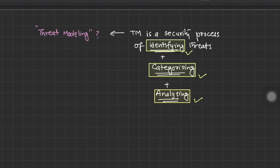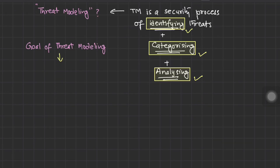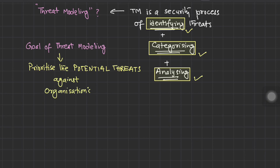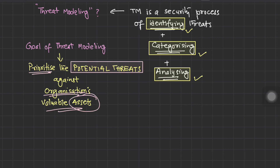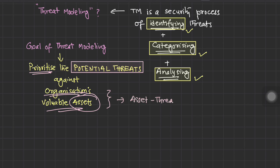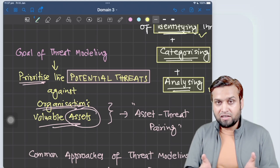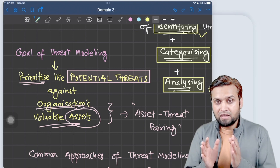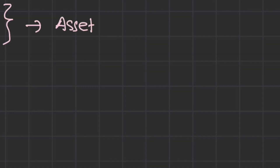When we look at the goal of threat modeling, the primary goal is to prioritize the potential threats against valuable assets. So here comes the term asset-threat pairing. We are prioritizing potential threats against the organization's valuable assets, and this prioritization is done keeping in mind the asset-threat pairing.